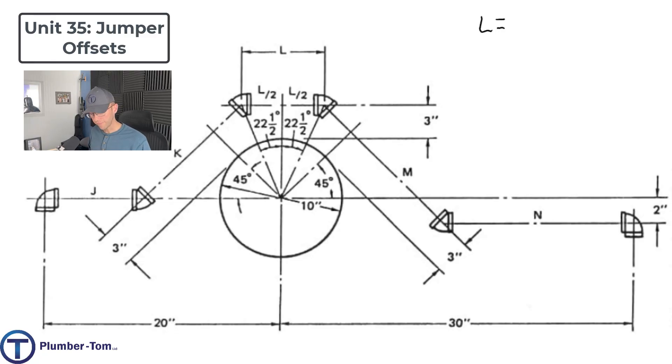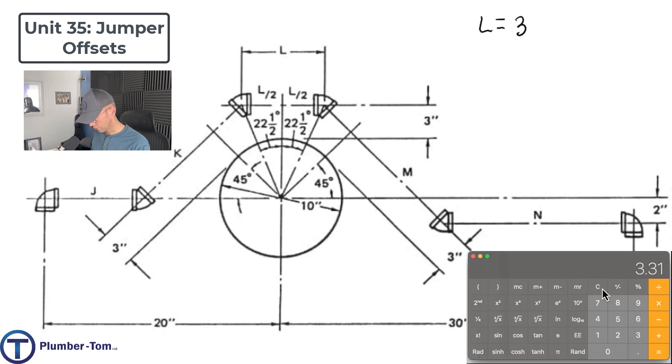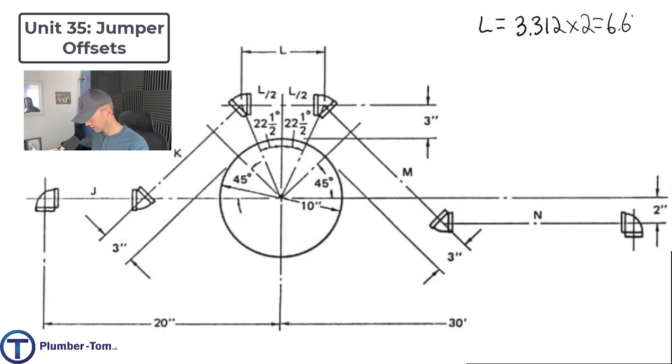Next, we'll solve for L. And L, we've already done most of the work for because we've done half of that, right? The L slash 2. We calculated that to be 3.312. So basically, we just have to times that by 2. We have 3.312 times 2. It's going to give us 6.624.